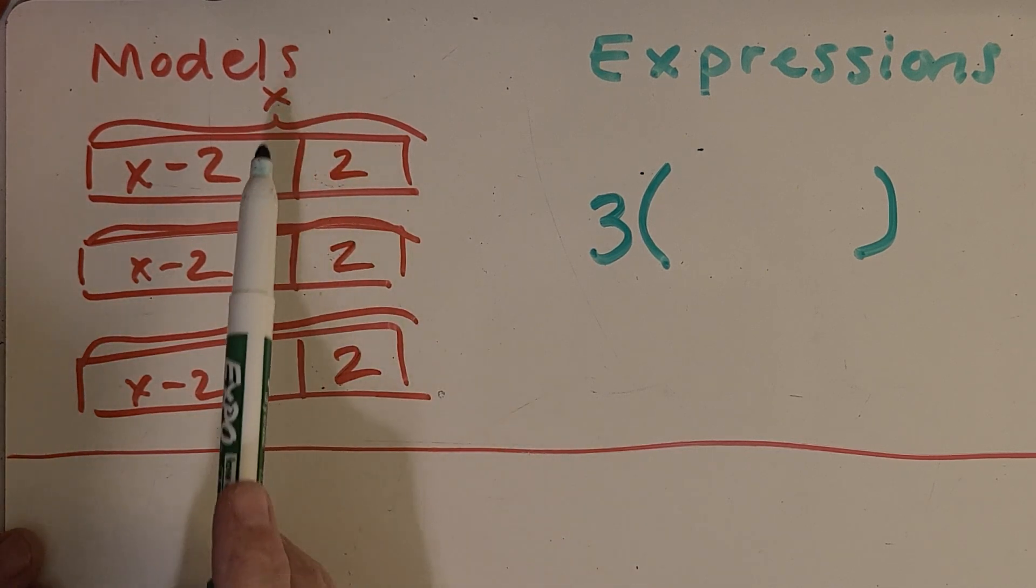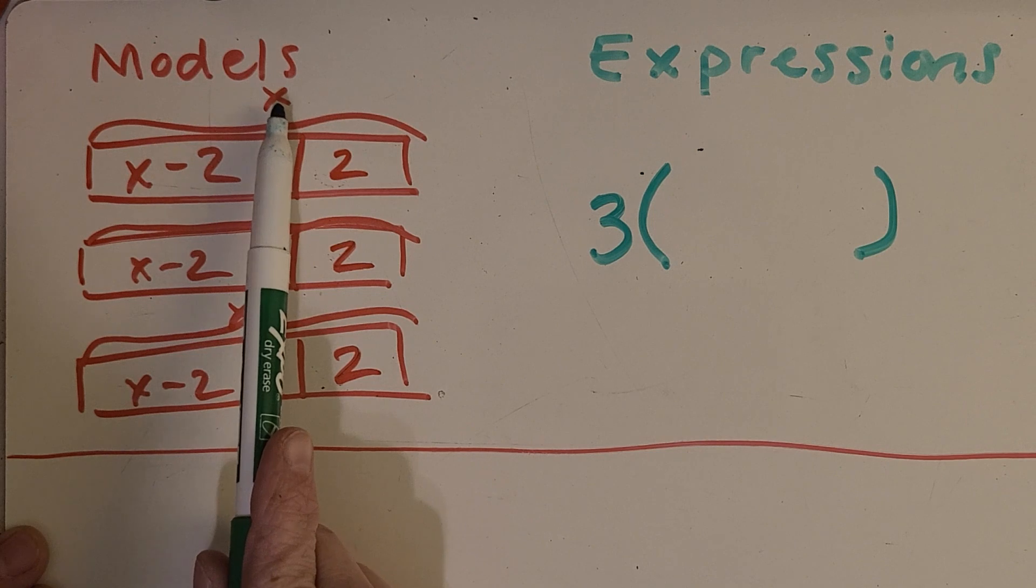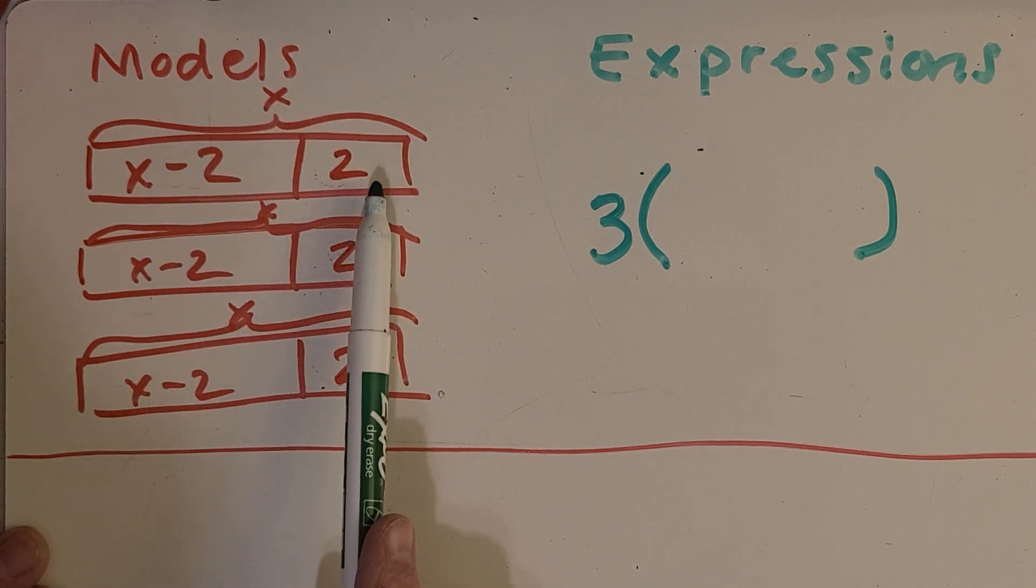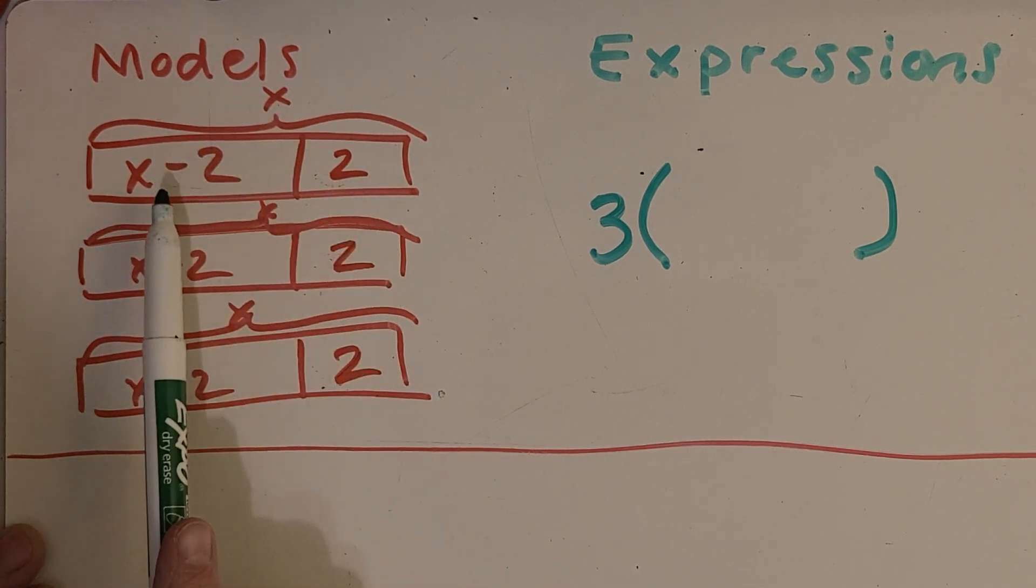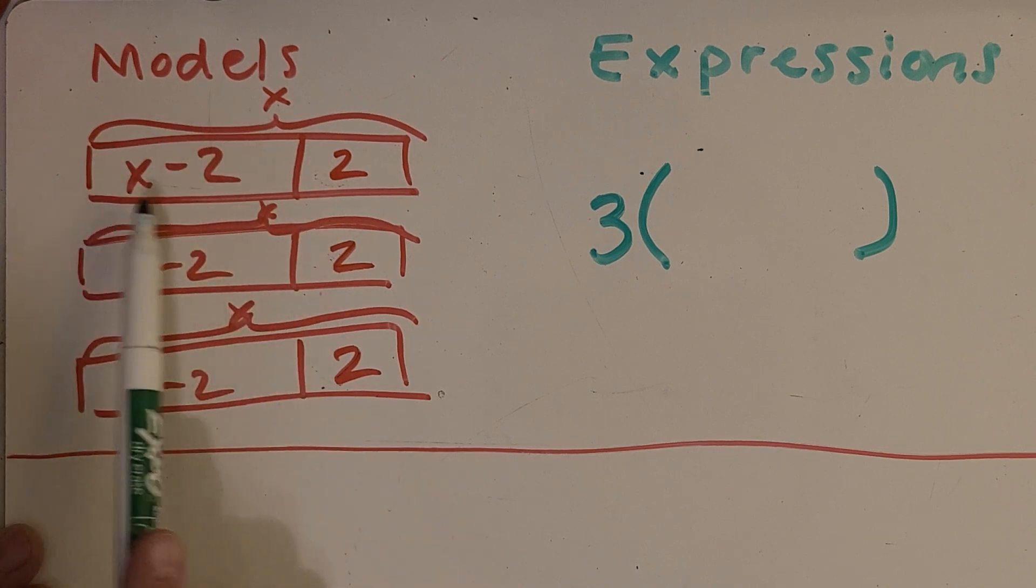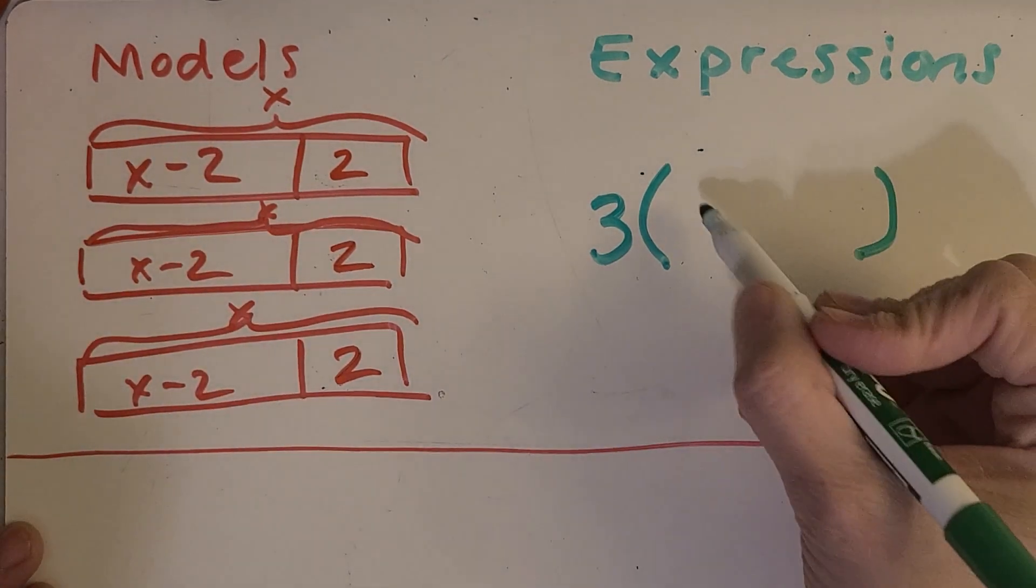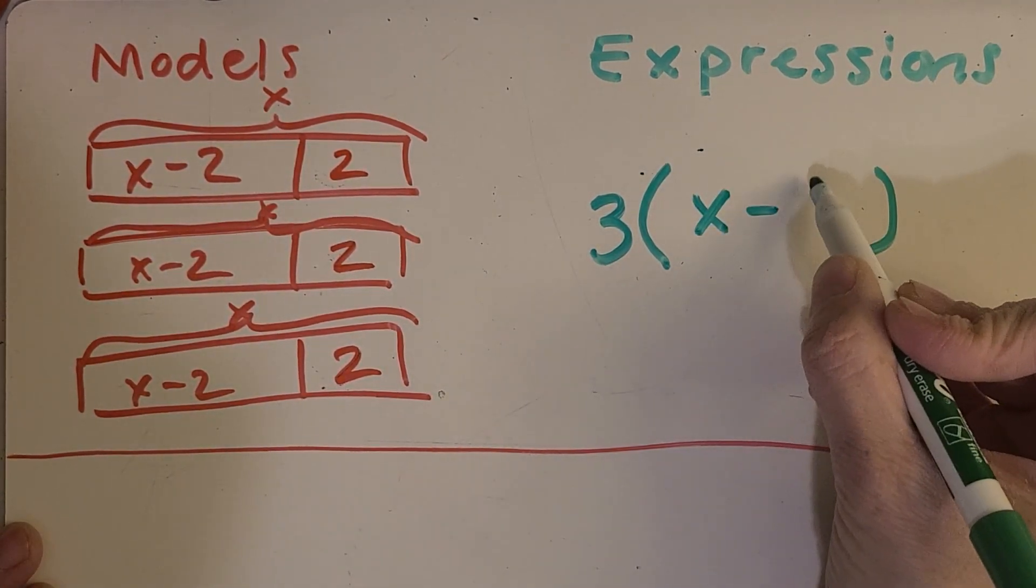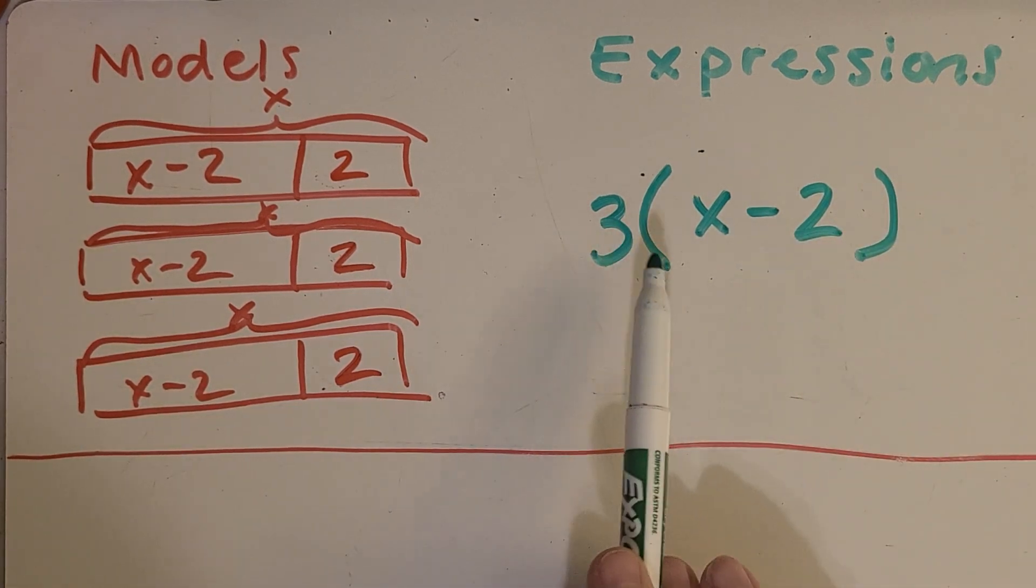All right, so I bet a lot of us are thinking, well it's X and then take away that two and then you get what's left inside of that model. So X minus two. So this is three groups of X minus two. Great job!